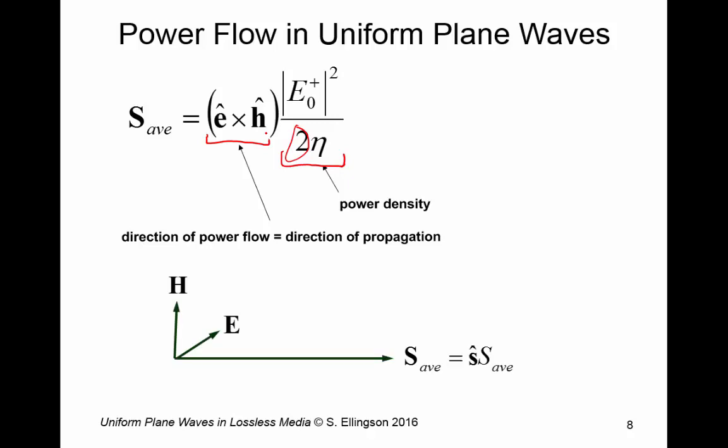So here's the picture we now have. We have E and H. They're both perpendicular to each other. They're both perpendicular to the direction of propagation. And the power flows in the direction of propagation. And the power density in the direction of propagation is given by this quantity. So that's a complete picture.